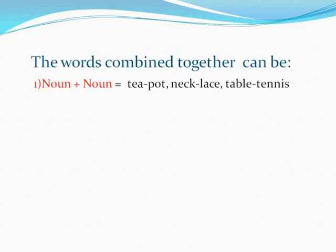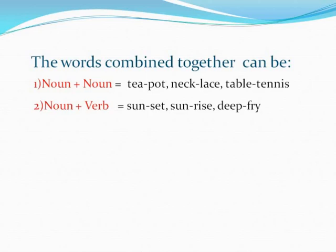Noun plus noun combination: 'Tea' is a noun and 'pot' is also a noun, and the newly formed word is Teapot. Such compounding is known as Noun Compounding. Other examples: Necklace, Table tennis.